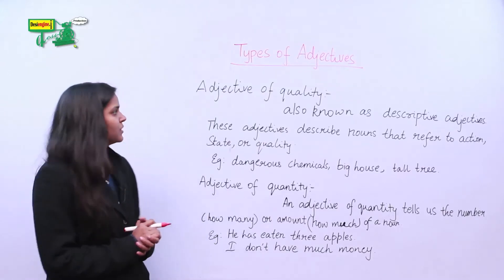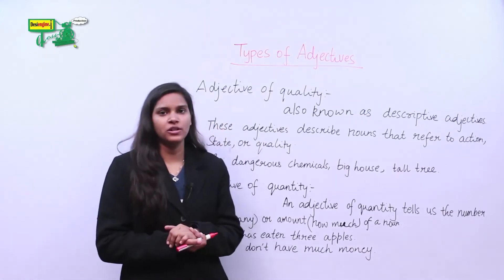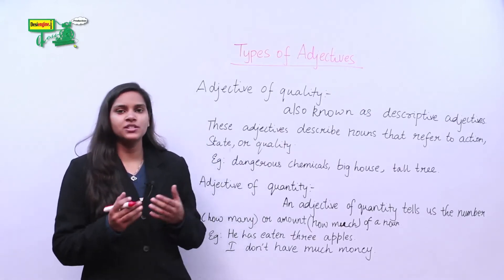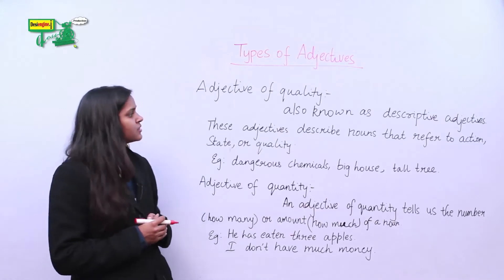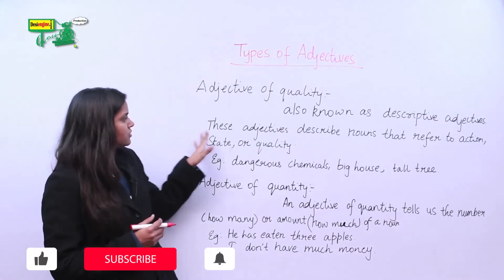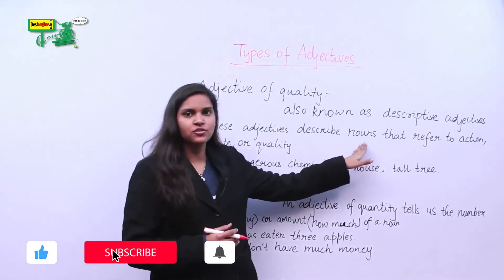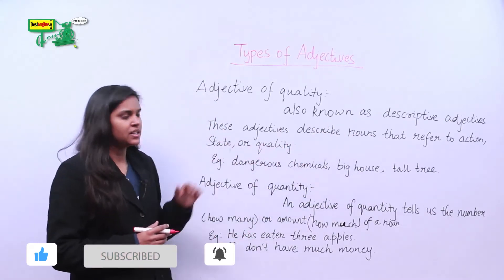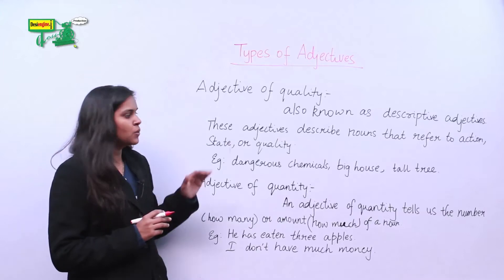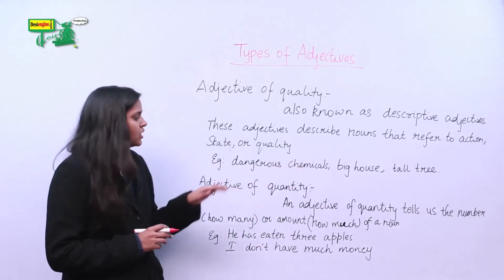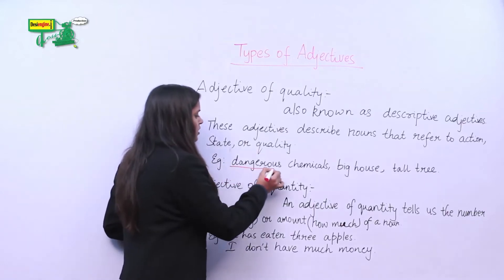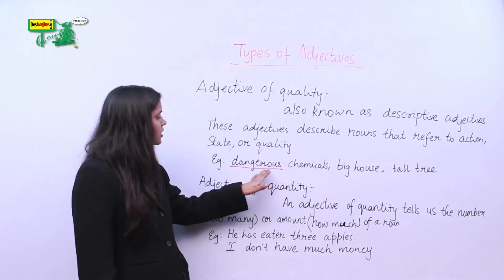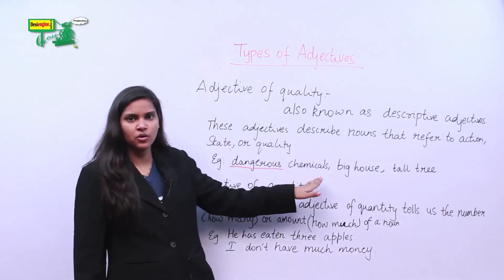The foremost among them is adjective of quality. As we know, adjectives basically modify the nouns. What an adjective of quality does is it describes the noun that refers to action, state or quality. Let's take a few examples. When I say dangerous chemicals, the word dangerous modifies my noun chemicals — it gives me some additional information about chemicals.